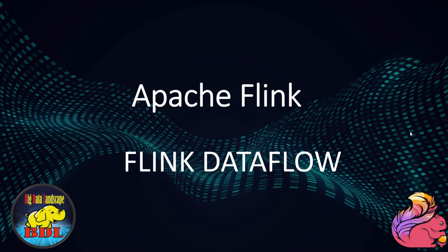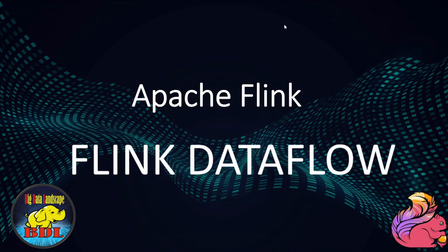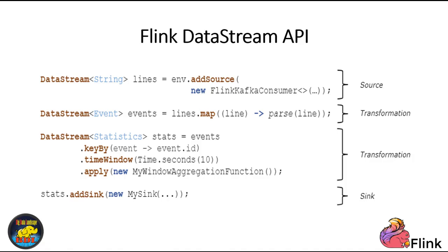Let's start by understanding the core components of a typical Apache Flink program. The code sample you see here, built using Flink's Java-based Datastream API, embodies the essential parts of a Flink program. The Datastream API in Apache Flink serves as the foundational framework for developing Flink programs. It offers a comprehensive set of tools for building and processing data streams.